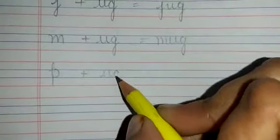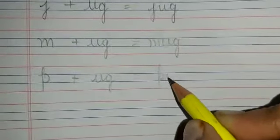Next is pug. P plus UG UG. What word will be formed? Pug.